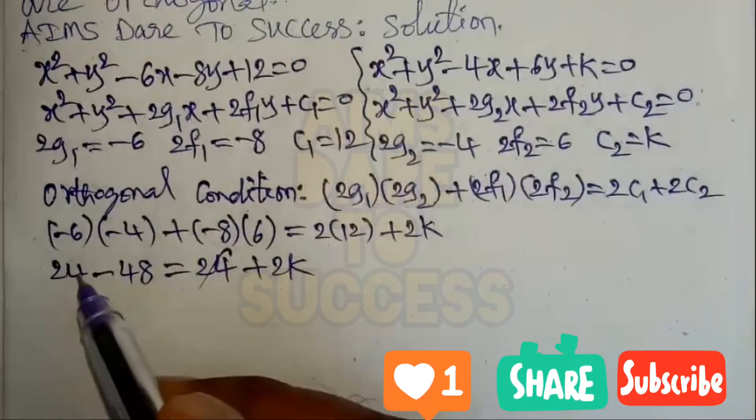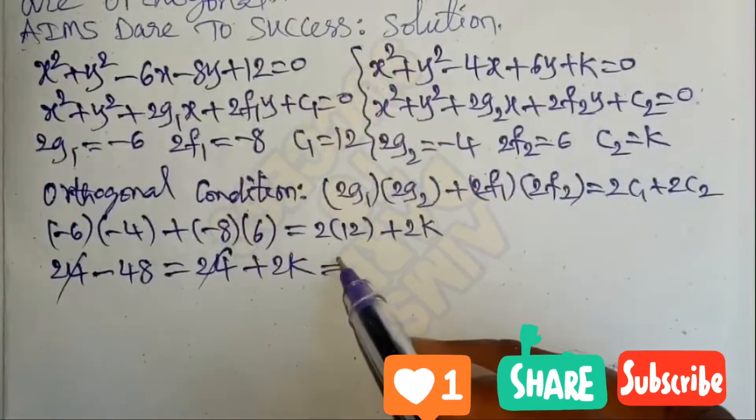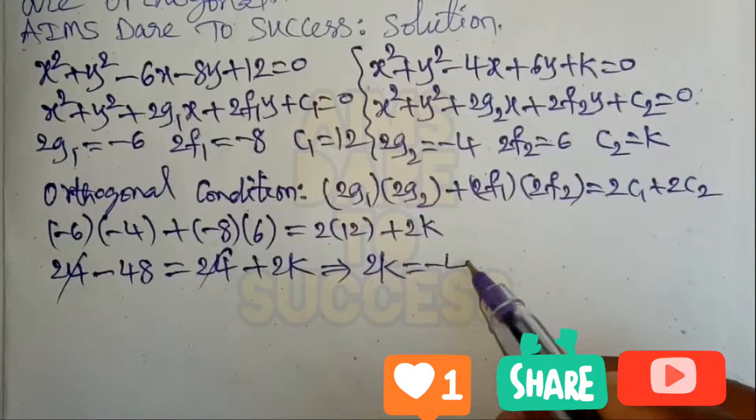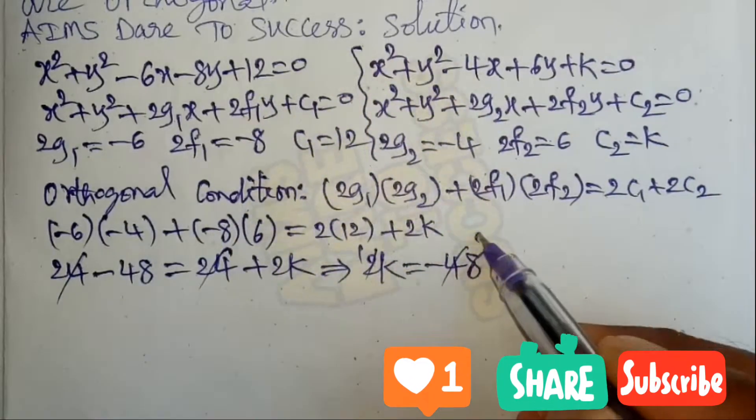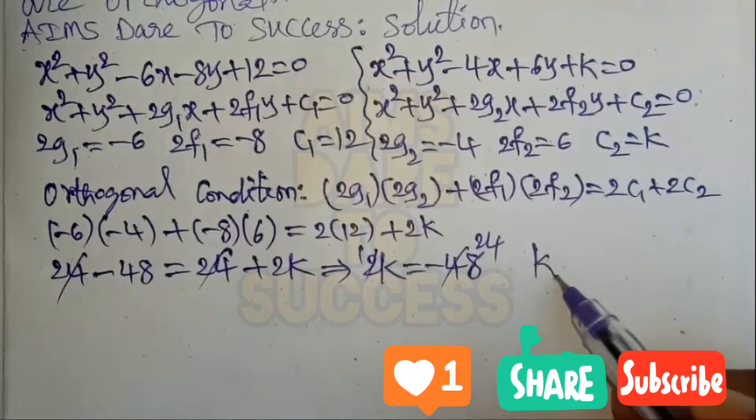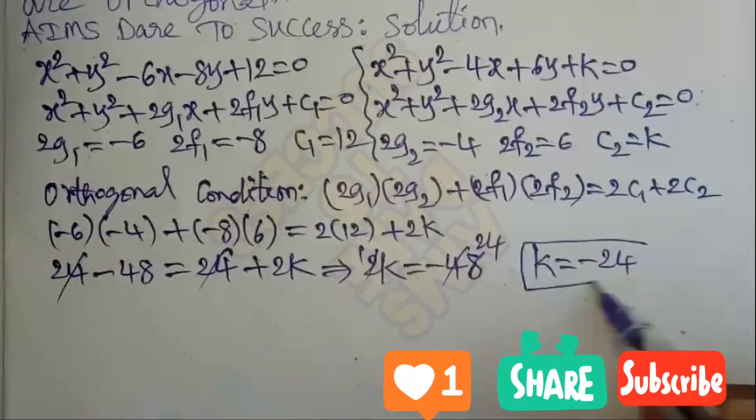...24 + 2k. Left side and right side, 24 gets cancelled. 2k = -48. Dividing by 2, we get k = -24. Therefore k equals minus 24.